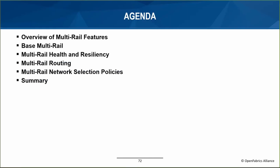In this presentation I'll cover the multi-rail feature set and describe the motivation and advantages it provides LNet. I'll start by giving a quick overview of LNet and why multi-rail represents a shift in how LNet works. Then I'll cover the different phases of the project: the base multi-rail feature, health and resiliency, improved LNet routing infrastructure, and finally network selection policies which give the administrator finer grain control over LNet traffic.